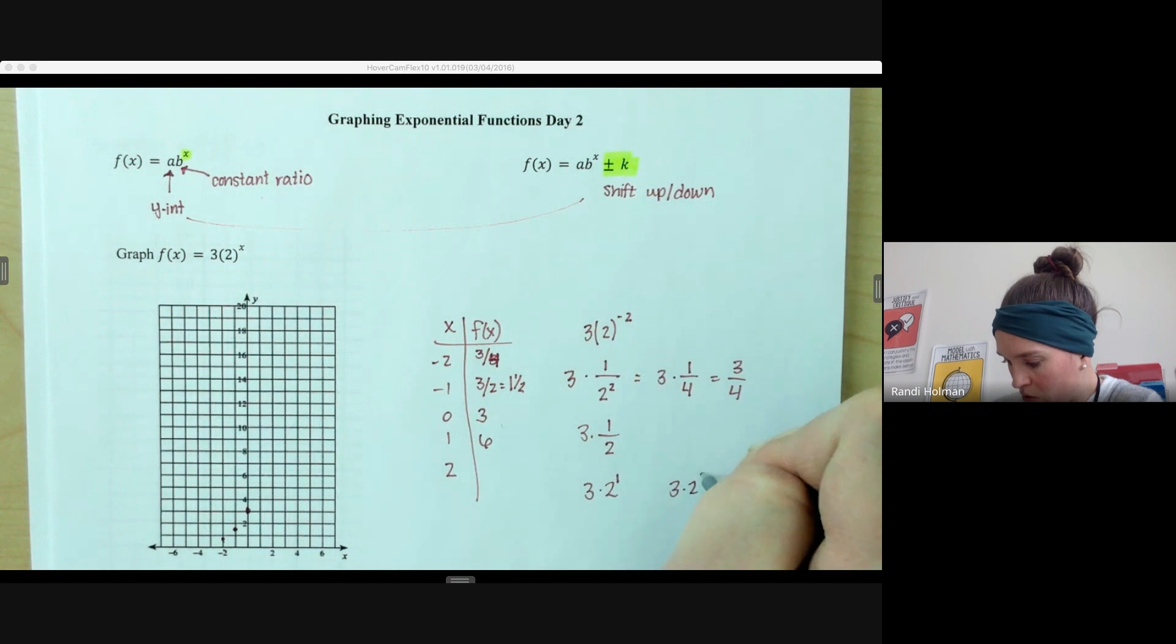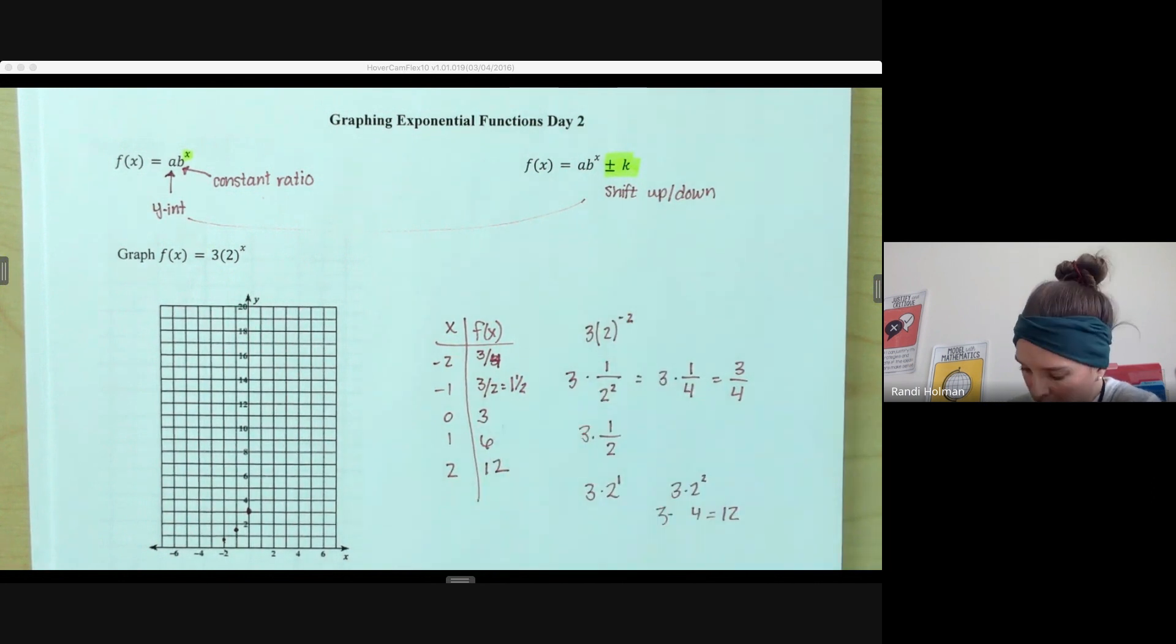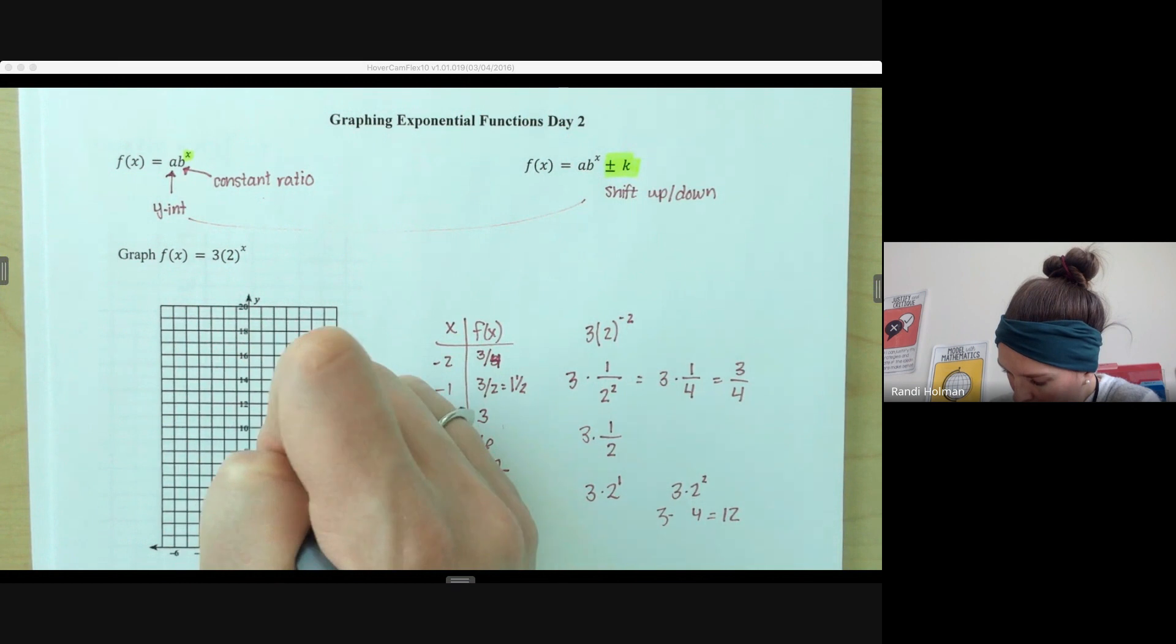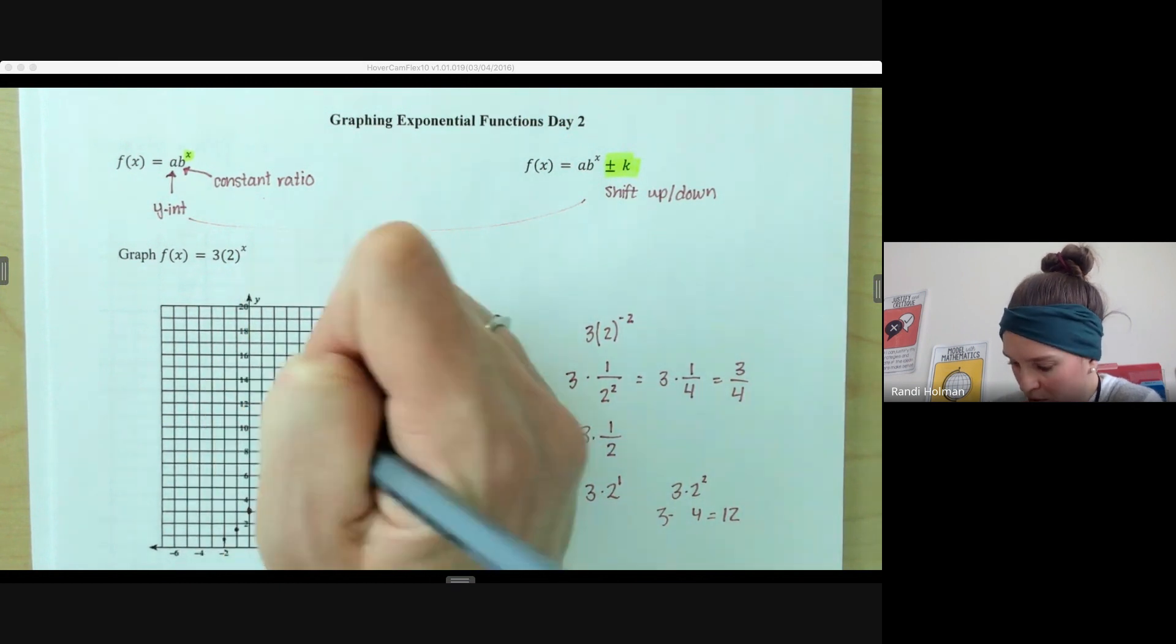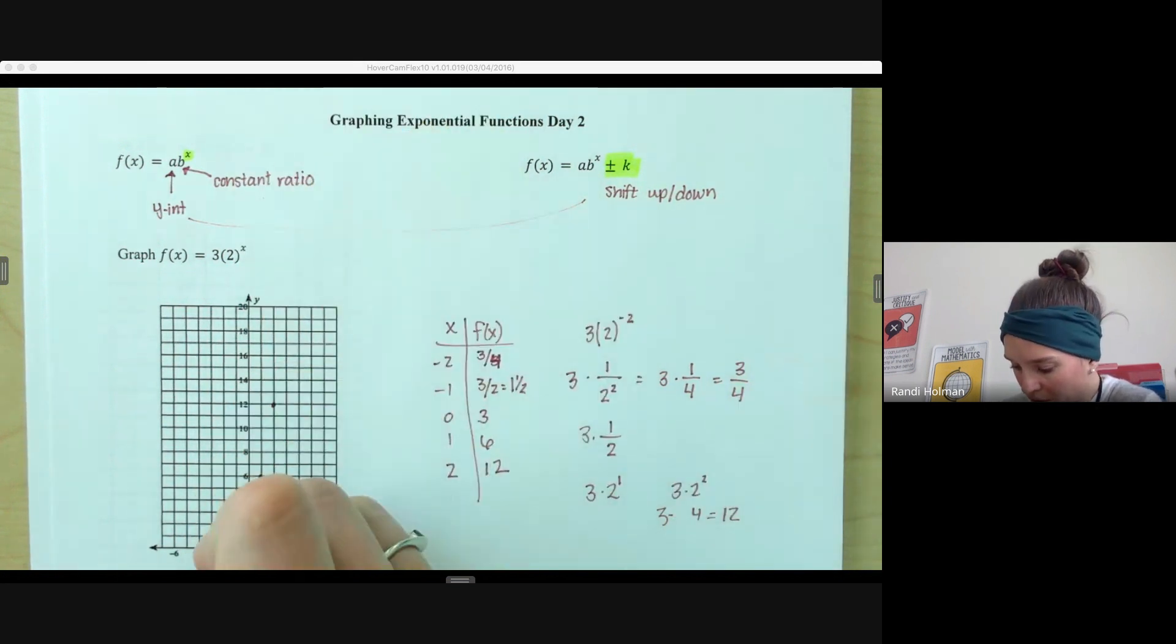3 times 2 squared, that's 4, times 3 is 12. So we end up with all of those values there. So at 1, we're at 6, at 2, we're at 12. We're doubling each time. So at 3, we'd be 12 times 2, which is 24, which is off our graph.